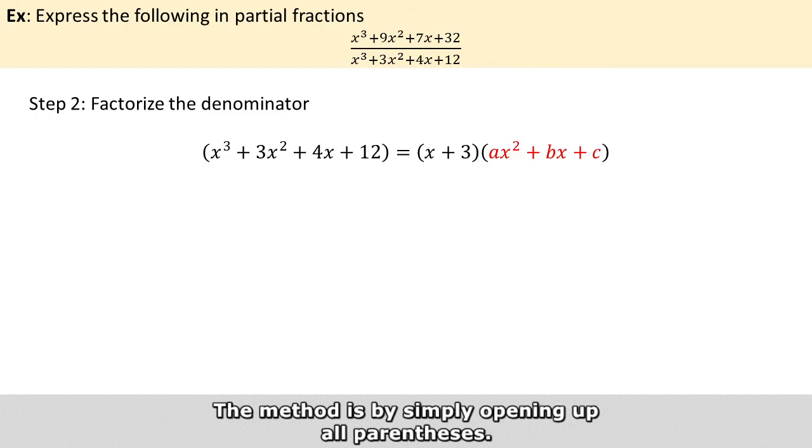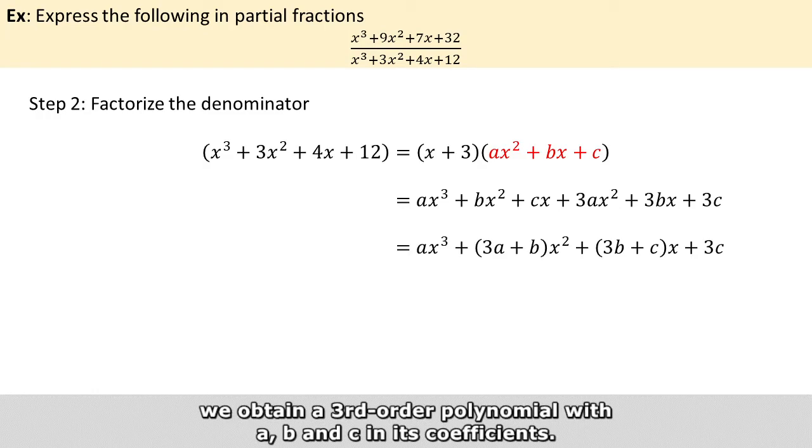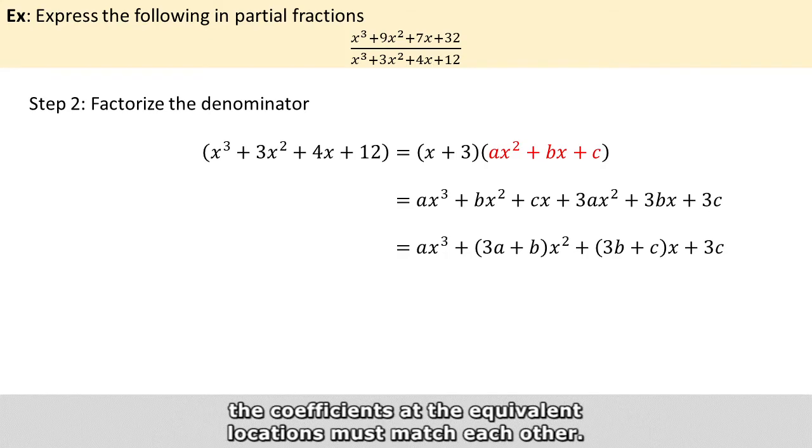The method is by simply opening up all parentheses. After grouping all the like terms we obtain a third order polynomial with a, b, and c as coefficients. Because this must be equal to the original denominator, which is a third order polynomial, the coefficients at the equivalent locations must match each other.